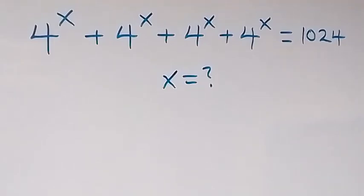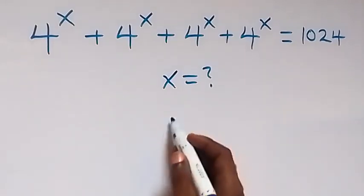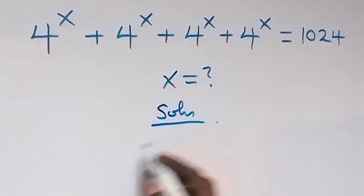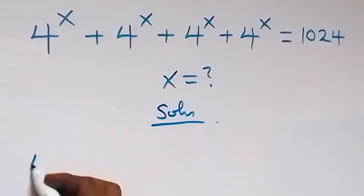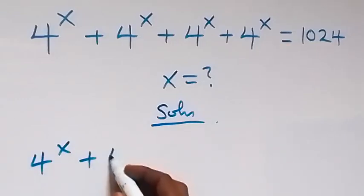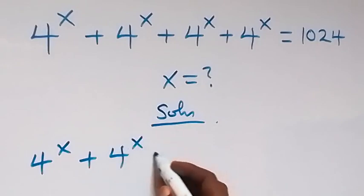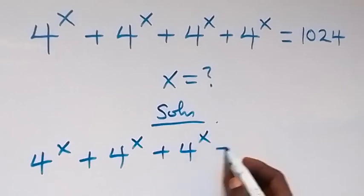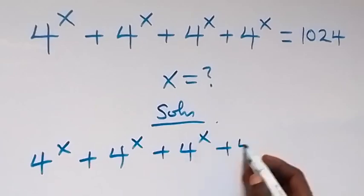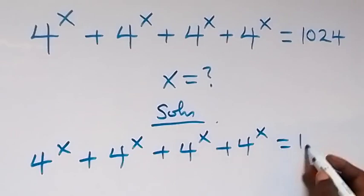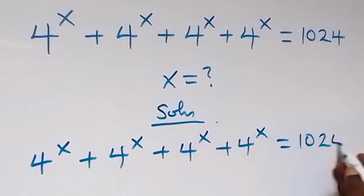Hello, you are welcome. How to solve this nice exponential equation? From here, what is given? Which is 4 to the power x plus 4 to the power x plus 4 to the power x plus 4 to the power x equals to 1024.